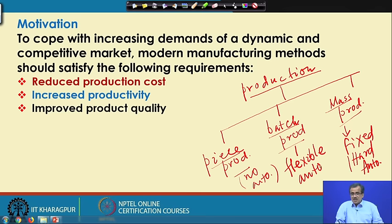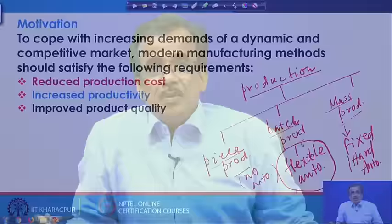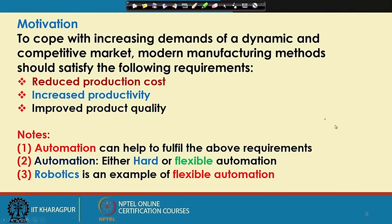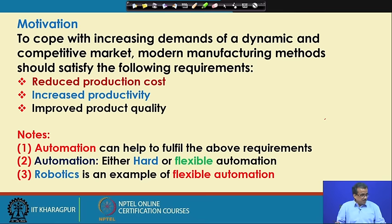Robotics is an example of flexible automation, and that is why for batch production — particularly in the manufacturing unit — we will have to go for robots if we want to survive in this competitive market. That is why robotics and robots have become so popular in manufacturing units. But nowadays, robots are used not only in manufacturing units but in different areas — for example, space science, medical science, seabed mining, agriculture, firefighting, and so on. Automation can help fulfill these requirements, and robotics is an example of flexible automation. That is why we should study robotics.